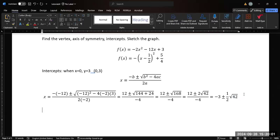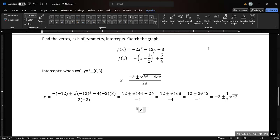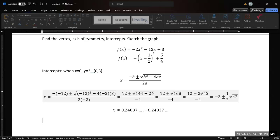So we can simplify a tad. 12 divided by negative 4 is going to be negative 3, and then 2 divided by negative 4 is going to be negative 1/2 with our square root of 42. So those are our two answers. And in order to plot them, we're going to need to estimate their values numerically. So negative 3 plus square root of 42 divided by 2 is going to be about 0.24037. And if this is a minus, negative 6.24037.